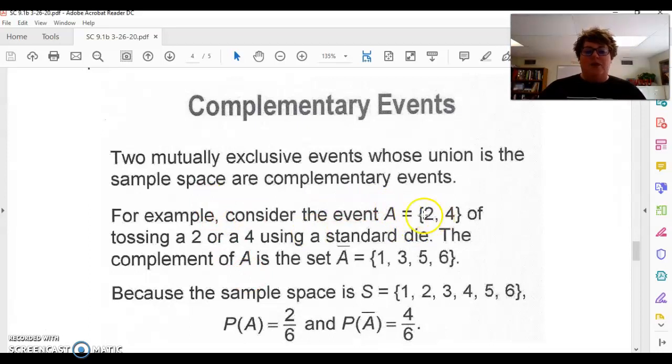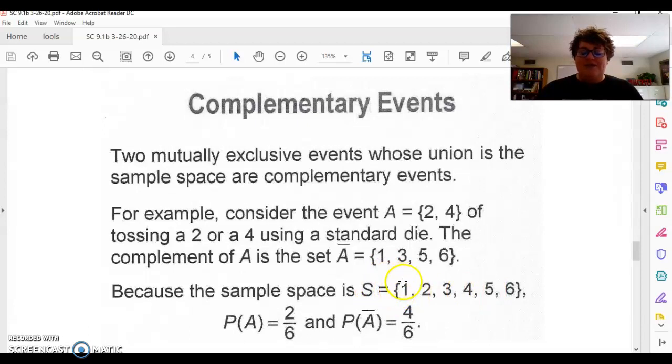So for example, we're rolling a die. Event A is a 2 and a 4. Event, so the complement is what happens when I don't roll a 2 or a 4. Well, I either roll a 1, a 3, a 5, or a 6. So when I put A and the complement of A together, I get my entire sample space. So that's what it means to be a complement.